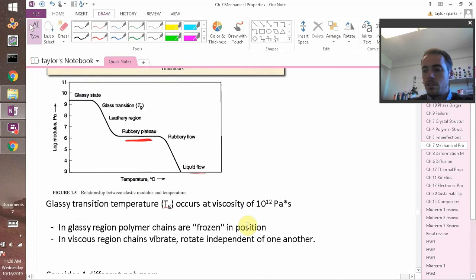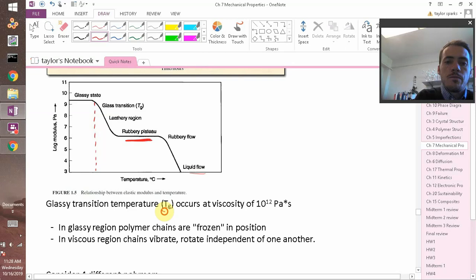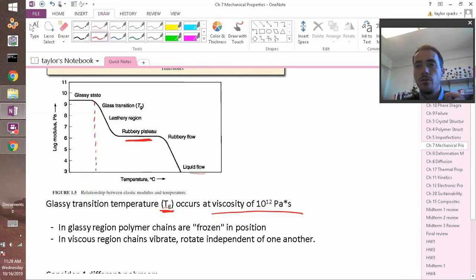So this glassy transition temperature, the temperature at which you start to transition there, that's an important thing to be able to measure. That would be important to know. If you have a polymer, you want to know at what point it stops behaving like a rigid material and starts behaving like something that's going to be leathery or rubbery. So the way that we define that temperature, we define Tg, the glassy transition temperature, as the point at which the viscosity becomes 10 to the 12th Pascal seconds. So totally arbitrary. We say that's the viscosity. As soon as it's at that viscosity, it's too flowy to consider it as a glass.